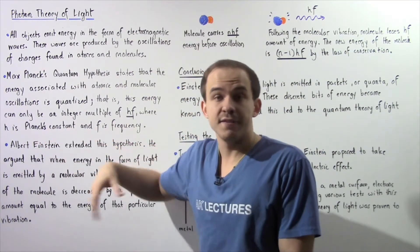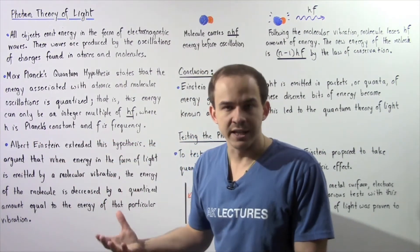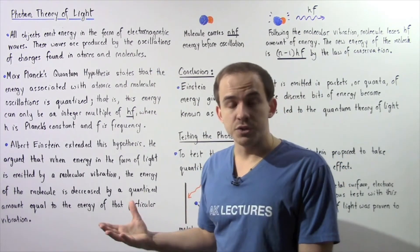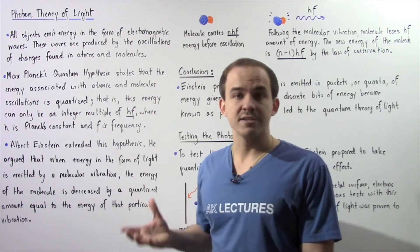Where h is Planck's constant, it's a value that was calculated experimentally, and f is the frequency of that particular oscillation.